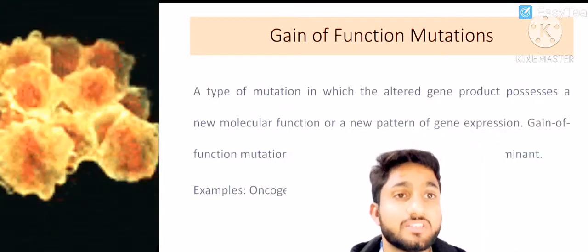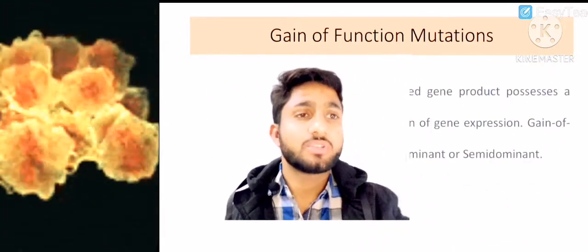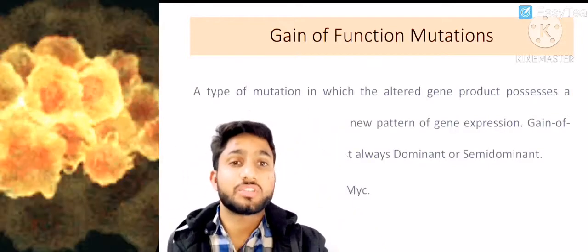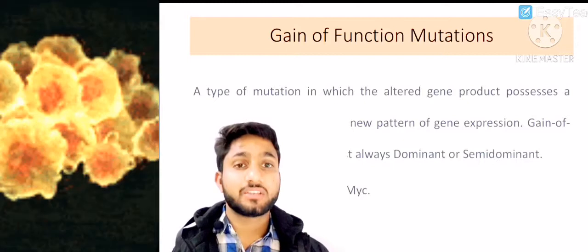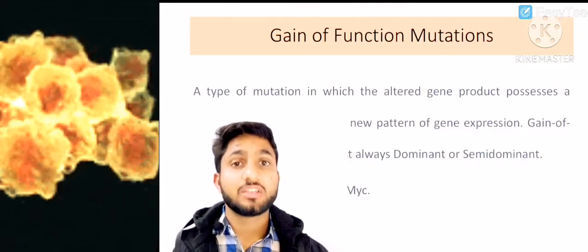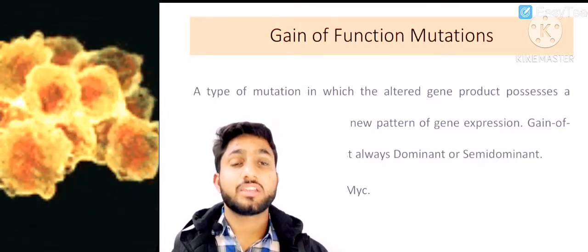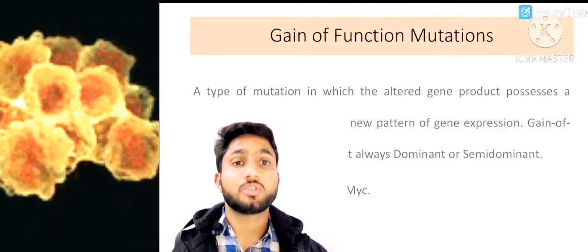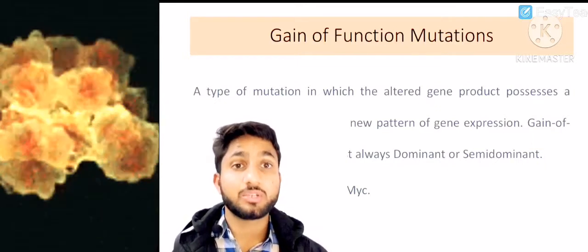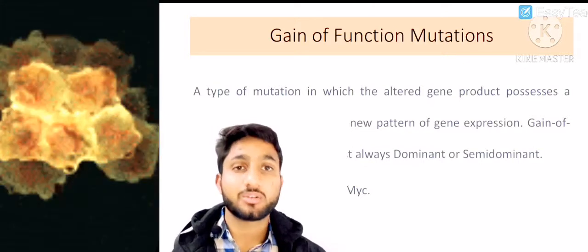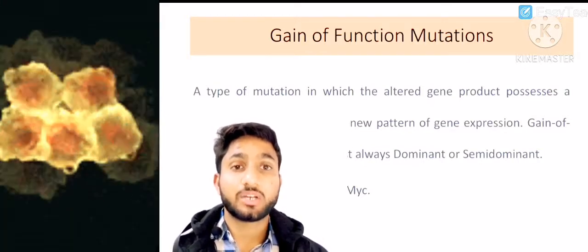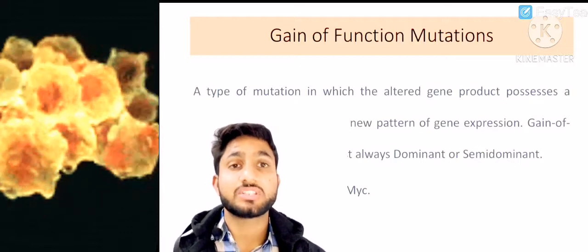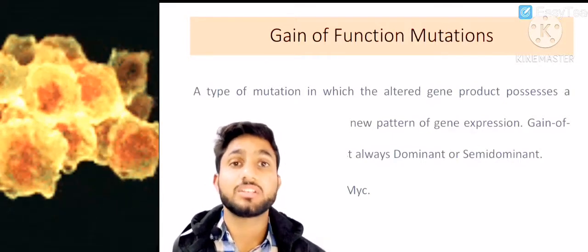First we discuss gain of function mutations. Gain of function mutations suggest that if there is a normal cell, certain genes will express in those normal cells to produce extra proteins, converting normal cells into cancer cells. Cancer cells arise due to gain of function mutations — some genes are gaining their functions in normal cells and converting them into abnormal cells.